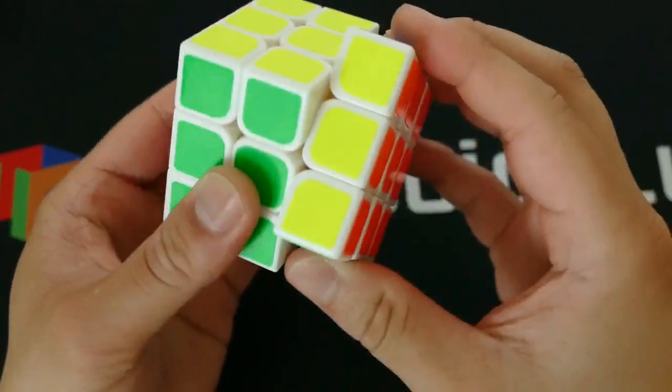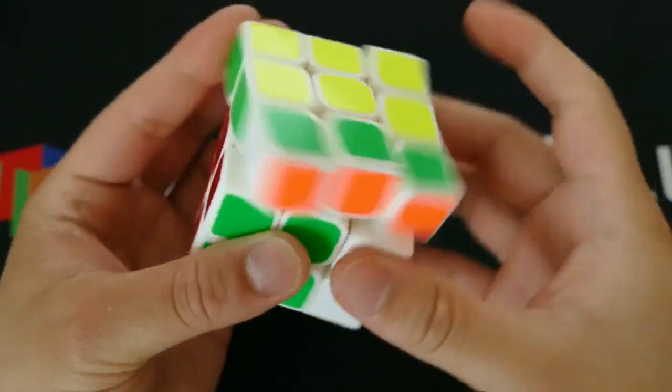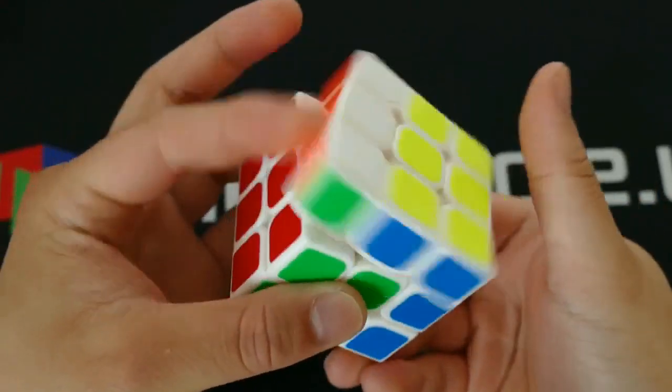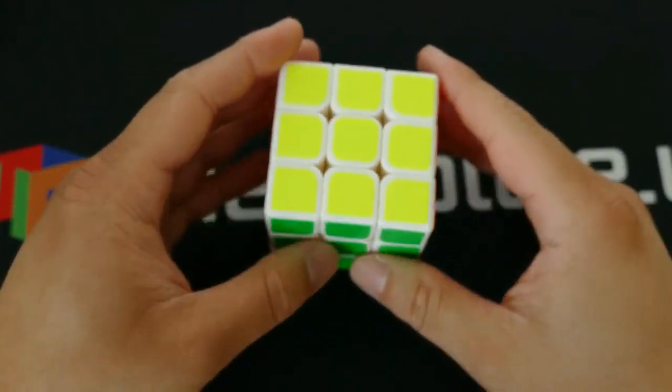The cube is generally stable and won't pop or corner twist. Corner cutting is decent. With lube, the cube is softer and has a more subdued feel, which means a little less click.